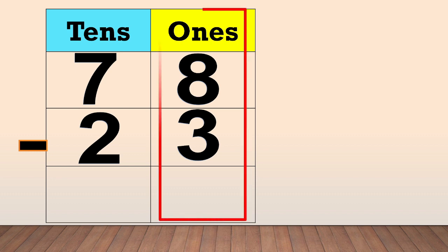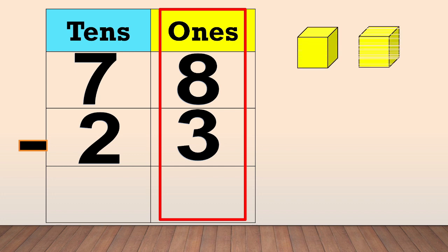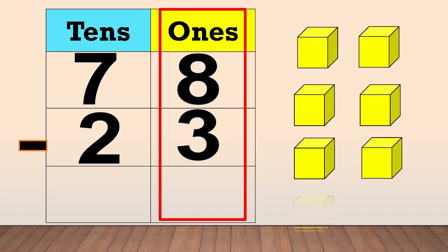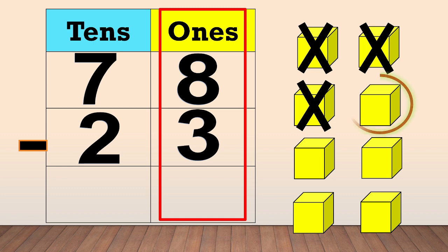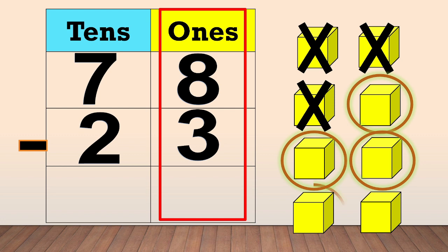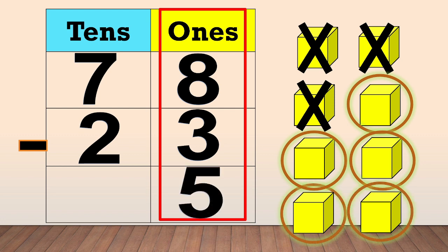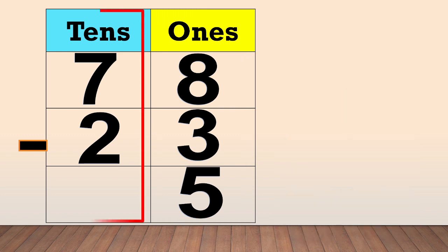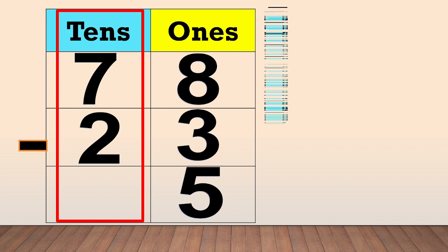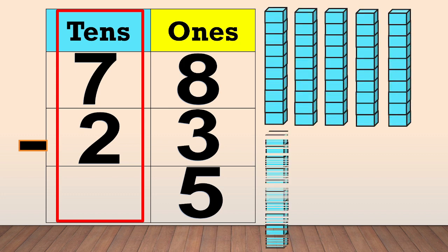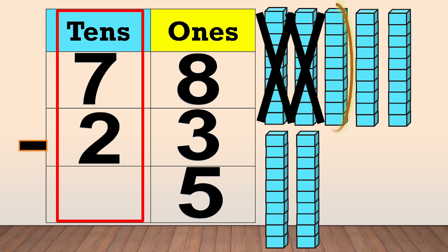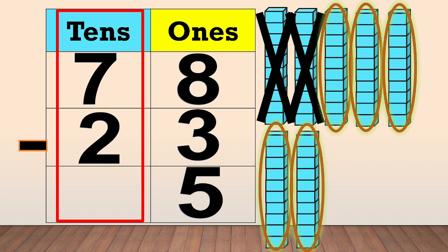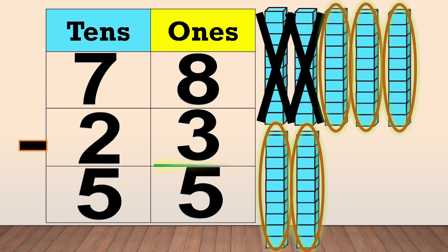Next, we subtract the ones. 8 ones minus 3 ones equals 5. Then subtract the tens. 7 tens minus 2 tens equals 5. So 78 minus 23 equals 55.